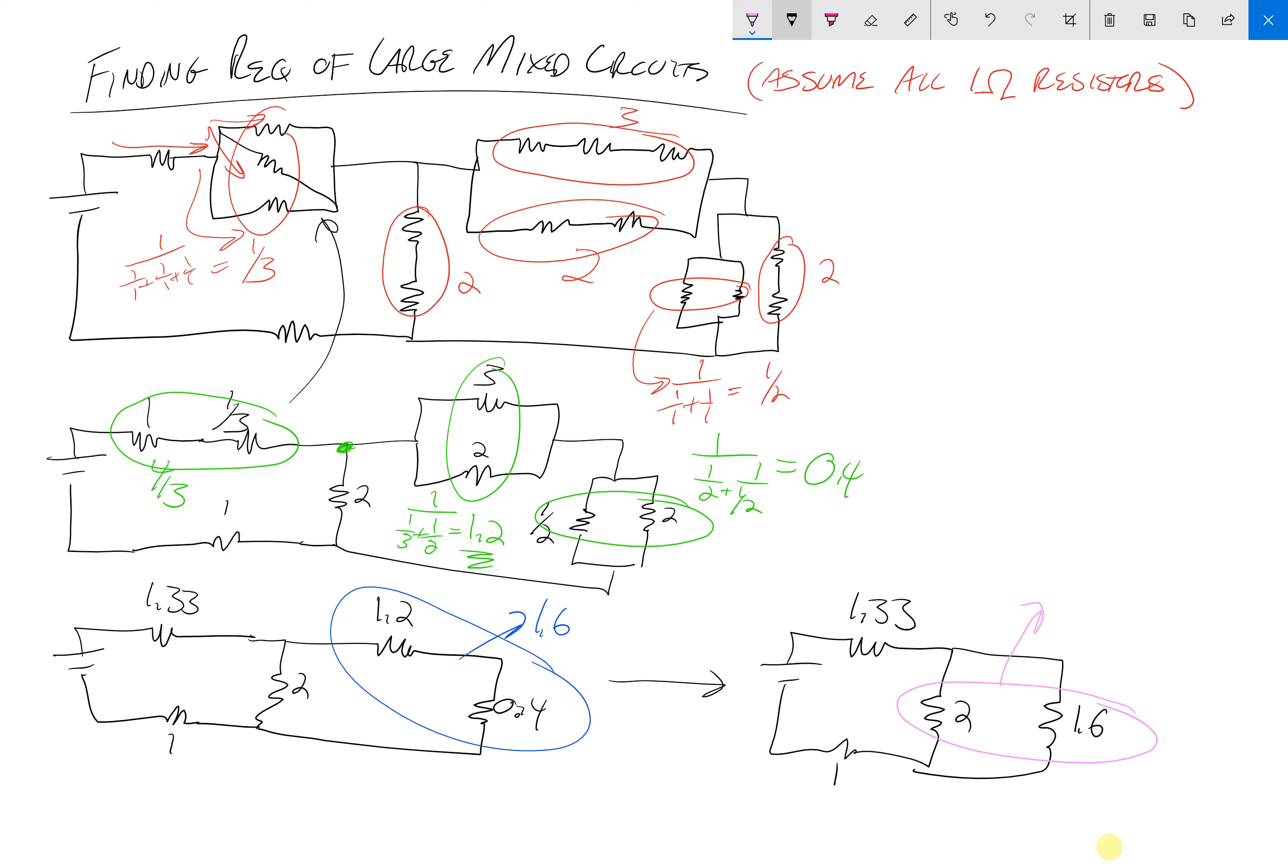These are in parallel, so that is 1 over (1/2 + 1/1.6). Again, they're in parallel because the current comes out of the source and it splits at this junction. Some of it goes to the 1.6, some of it goes to the 2, and it rejoins at this junction. So I'm going to put this in my calculator. Sorry about that, I should have done that earlier. 1/2 + 0.5, and I am getting 0.89.